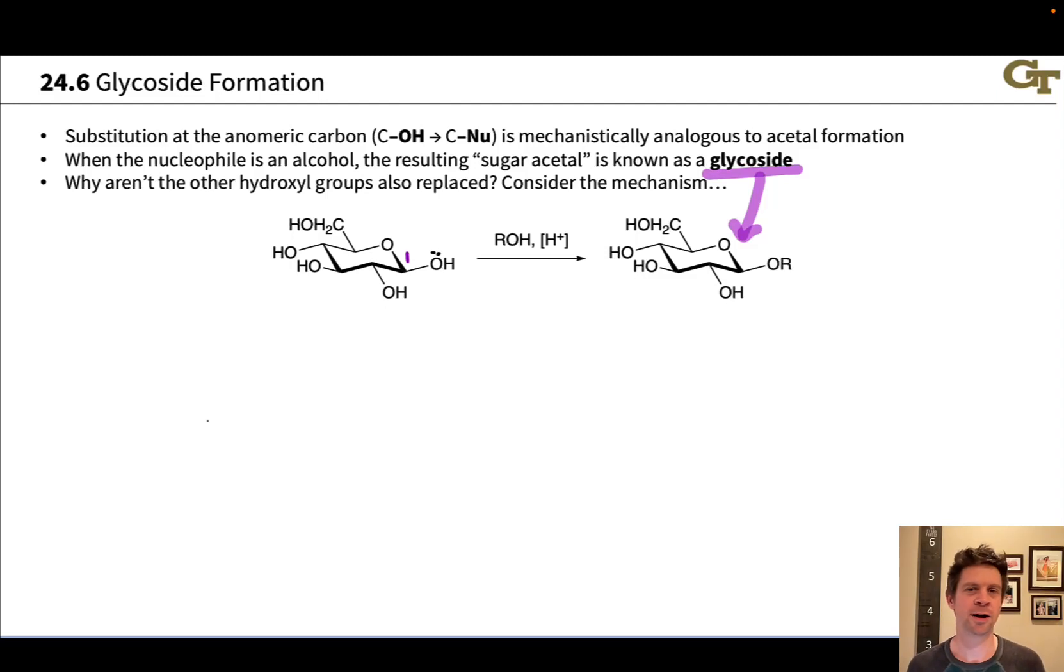We're going to start this video by talking about glycoside formation, which is an extremely important reaction type for carbohydrates. To begin talking about this, I want to turn the clock back and talk about hemiacetal and acetal formation involving ketones and aldehydes with alcohols in general. I want to open the sugar that's on the slide back to its open chain form.